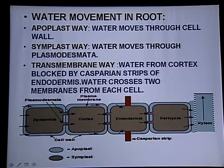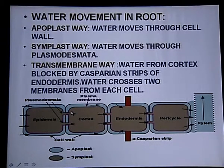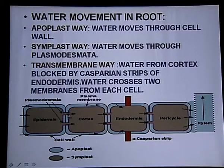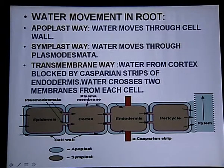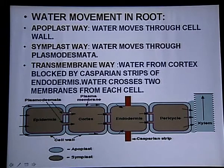The second is the symplast pathway — when water moves through plasmodesmata. Plasmodesmata are the cytoplasmic connections between two cells. So when water moves through the plasmodesmata present between cell walls, that is called the symplast pathway.